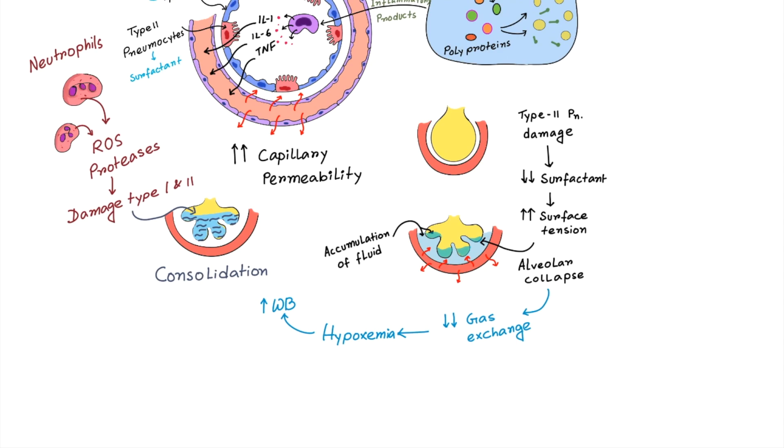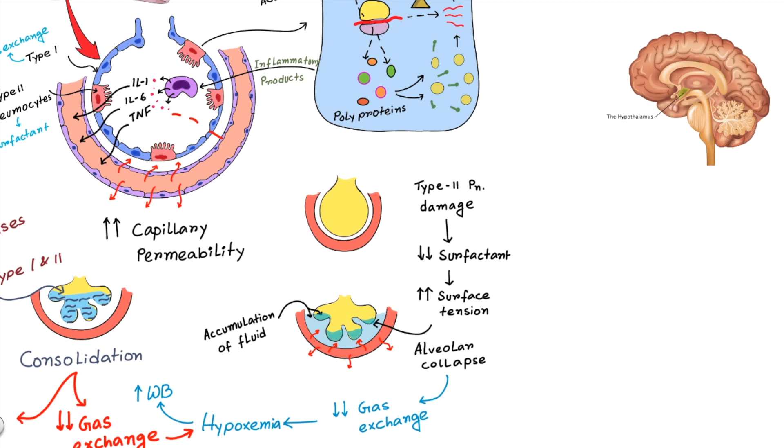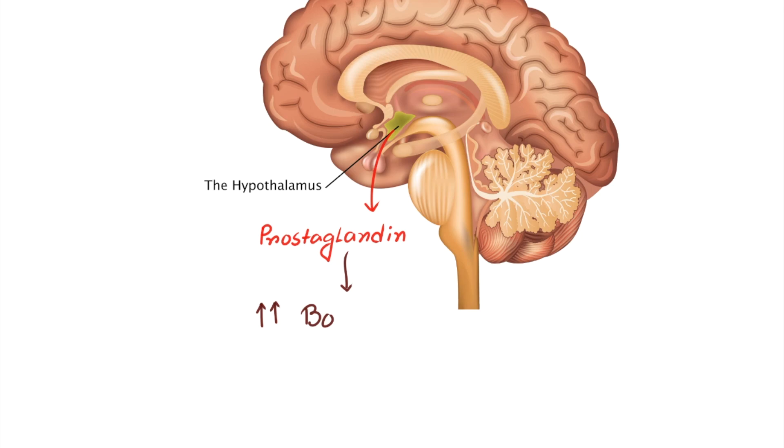Like, it will decrease gas exchange, then cause hypoxemia and it can cause mechanical irritation, which can lead to cough. Now, interleukin-1 and interleukin-6 can travel to hypothalamus and stimulate the hypothalamus to release specific prostaglandin, which is responsible for increased body temperature. That is how the virus can cause fever.